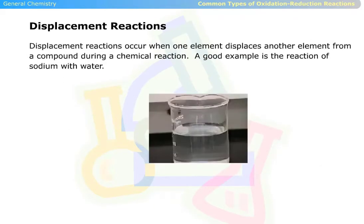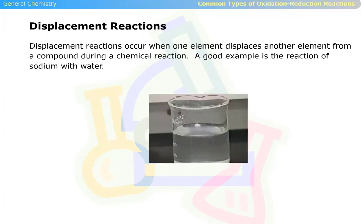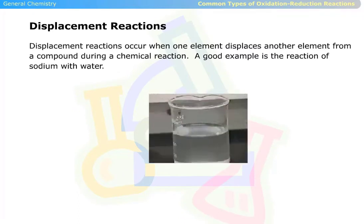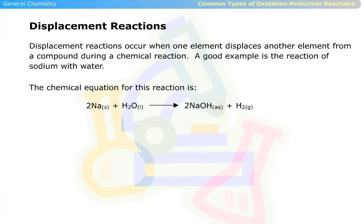Displacement reactions occur when one element displaces another element from a compound during a chemical reaction. A good example is the reaction of sodium with water. This is the chemical equation for this reaction.